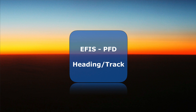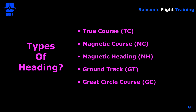We're looking at the PFD — primary flight display — and specifically within the PFD we're looking at the heading display. There are many types of heading. True course is the course plotted between two points but takes into account no corrections. A magnetic course is true course plus or minus variation. Remember that the true north pole is different than the magnetic north pole, and you have to take variation into account. East is least and west is best, if I remember correctly.